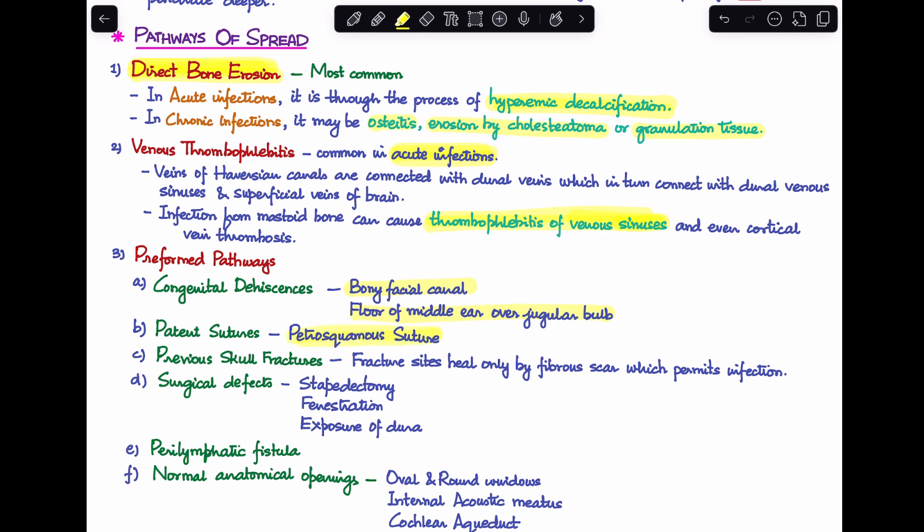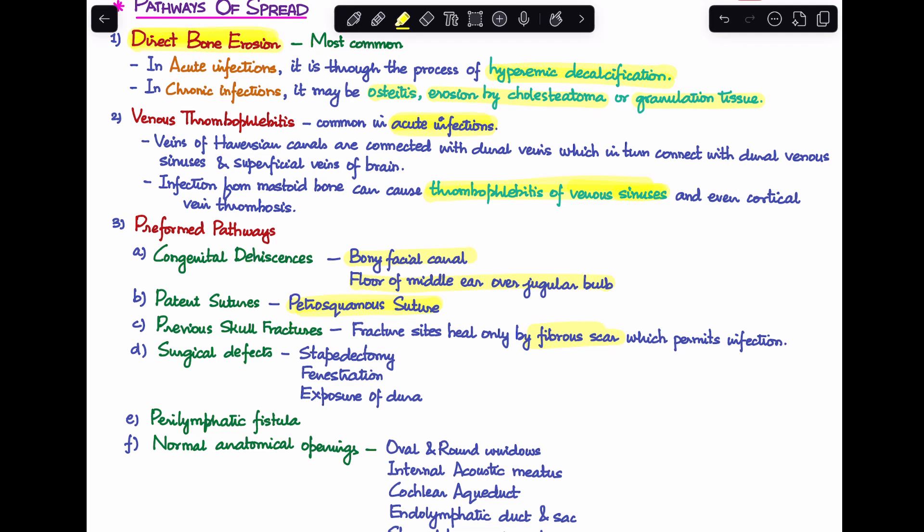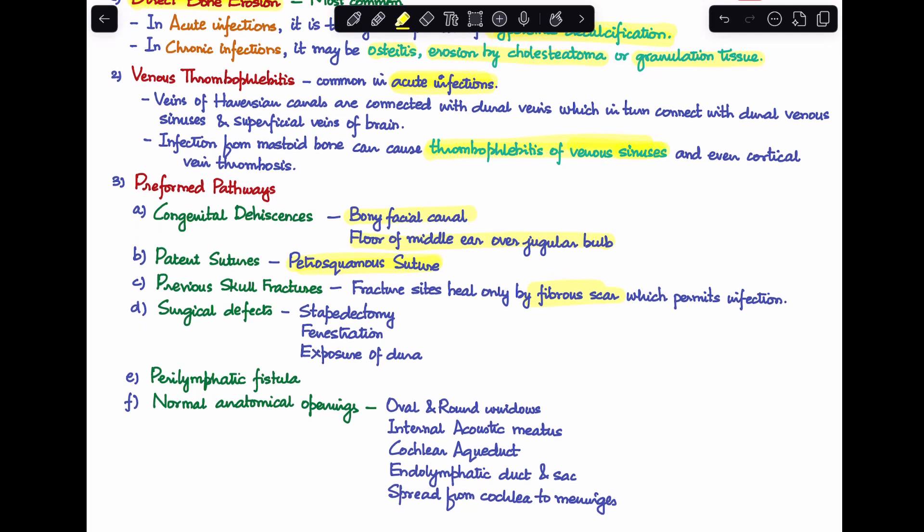Third is the presence of previous skull fractures. Now in previous skull fractures, sometimes the fracture sites heal only by a fibrous scar, so this site can actually end up in transmitting infection. Fourth is surgical defects produced by surgeries like stapedectomy, fenestration, and exposure of dura. Fifth is presence of perilymphatic fistula. And sixth is the presence of normal anatomical openings like oval and round window, internal acoustic meatus, cochlear aqueduct, endolymphatic duct and sac, and spread from cochlea to meninges.